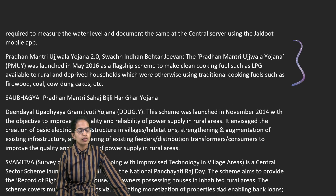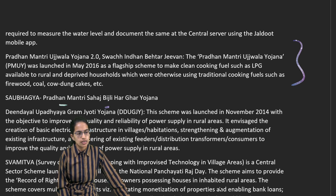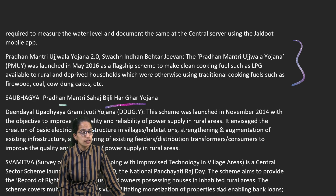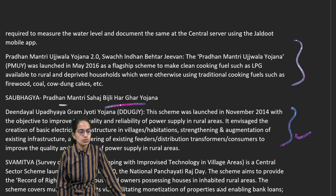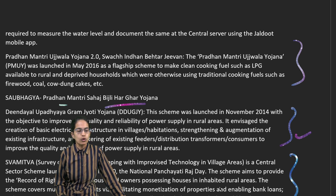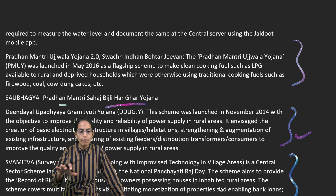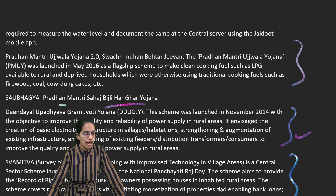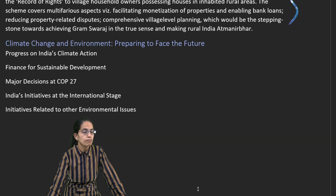The Ujwala scheme provides LPG connections. The Saubhagya scheme — Sahaj Bijli Har Ghar Yojana — provides last-mile electricity connectivity at home. The Gram Jyoti Yojana supplies power to rural households. The Swamitva scheme maps land parcels through drones, ensuring clear allocation of land to individual owners.